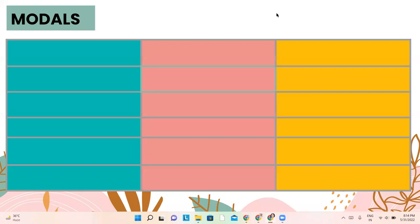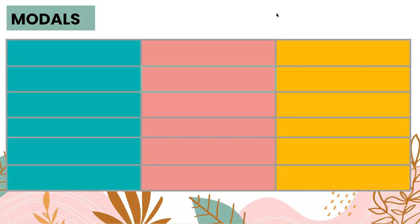Hello dear children, today we are going to learn about modals. When we talk about modals, we talk about words like can, could, shall, should, will, would, etc. Modals are nothing but helping verbs. Now let's see how these modals are used in correct grammar and how we use them when we use English as a language.